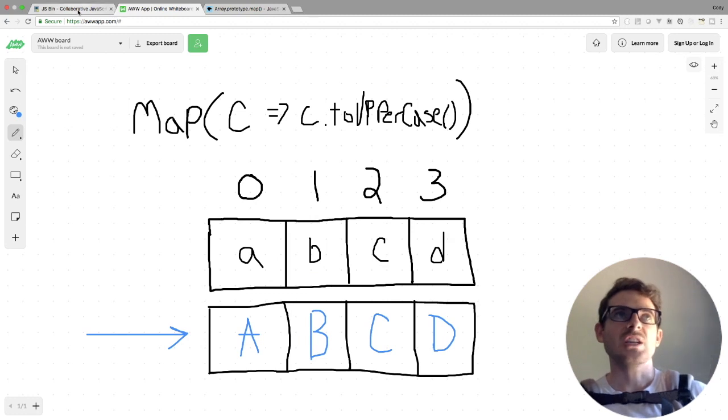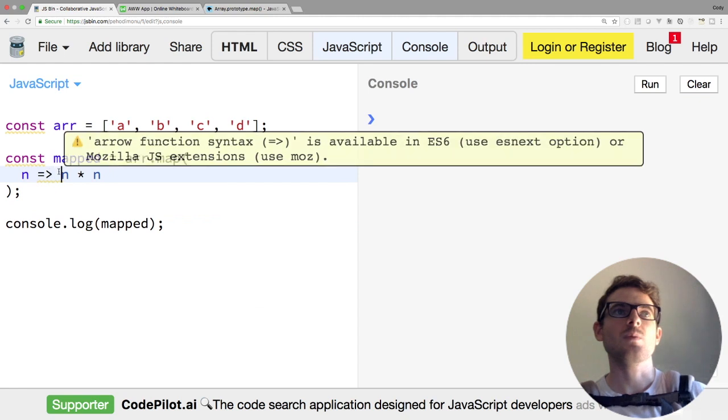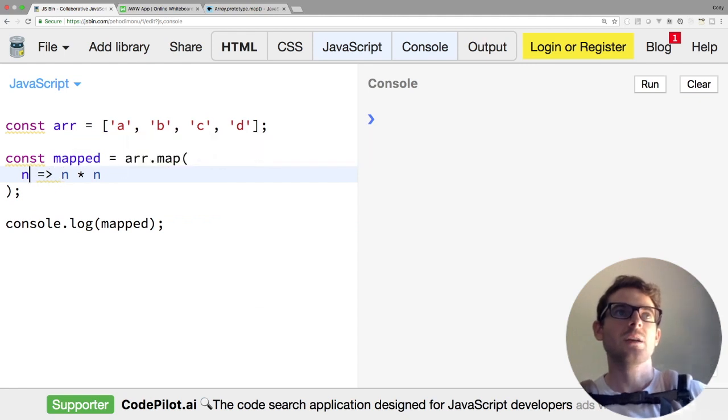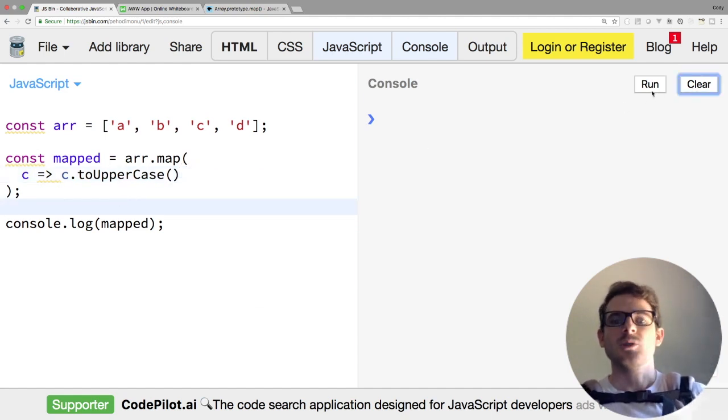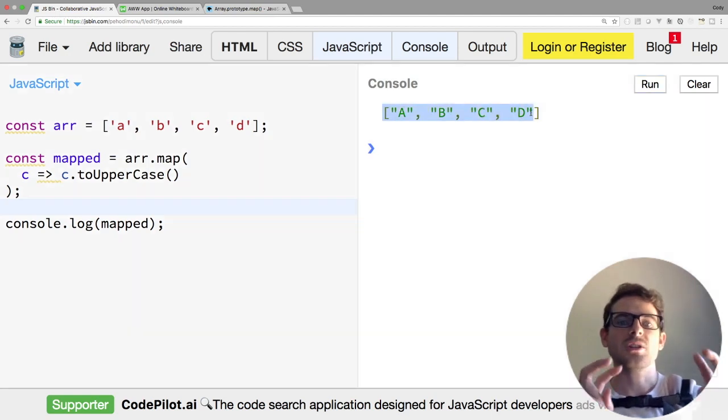So let's again move over to JS Bin and try that out. If I go here and just change my array to A, B, C, and D, we need to change our map function to be what it was in that example. So I can say c fat arrow c.toUpperCase and call it because it's a function. So now if I were to run this code, notice that our new array or the array that just got mapped is going to have all those same elements, everything converted to uppercase.